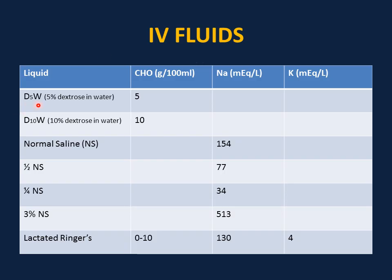The first common IV fluid is D5W, 5% dextrose in water. It has 5 grams of sugar per 100 ml and is usually combined with normal saline, half normal saline, or quarter normal saline. The next one is D10W, which is 10% dextrose in water. It has 10 grams of sugar per 100 ml, commonly used in neonates in the first few days, and may also be used for cases of hypoglycemia.